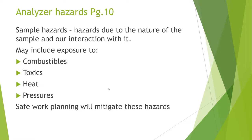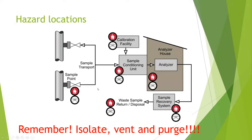If you don't know, ask — nothing is worse than an accident caused by ignorance. Hazard locations include anywhere between the pipe tap and the analyzer, including the sample point, transport system, sample conditioning unit, calibration facility, waste, and the analyzer housing itself. Wherever there's a connection, you could potentially be exposed. The golden rule is to isolate, vent, and purge. Understanding the system and how to do that is critical.